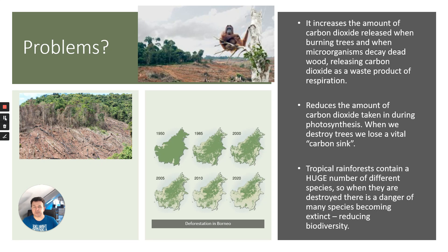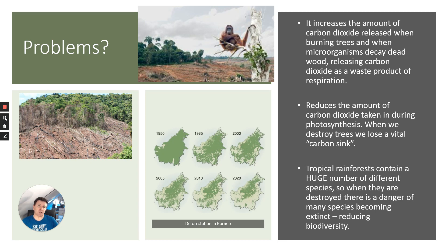Why is deforestation such a problem? There are three main issues. First, it increases the amount of carbon dioxide released — most trees are burned, releasing stored carbon as CO2, and microorganisms respiring as they decay the dead wood also release carbon dioxide. Additionally, trees are a carbon sink — during photosynthesis they convert CO2 into carbon and biomass — so destroying trees means losing a vital carbon sink.